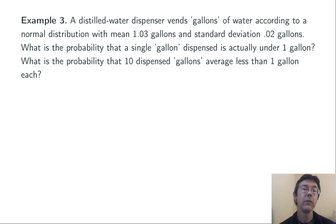Example 3. A distilled water dispenser vends gallons of water according to a normal distribution with mean 1.03 gallons and standard deviation 0.02 gallons. So the amount it dispenses isn't going to be exactly a gallon every single time, even if you're pushing the button that says 1 gallon. It's in general going to give you a little bit more than you asked for, but occasionally it will give you less. First question is, what's the probability that a single gallon is actually under 1 gallon? And the second question is, what's the probability that 10 gallons average less than a gallon apiece?